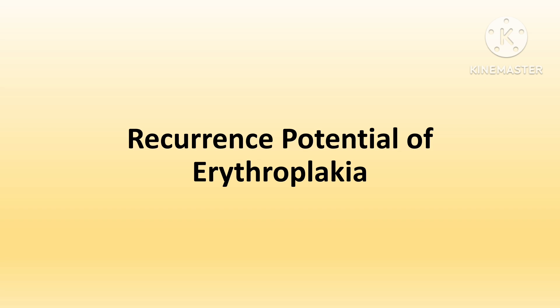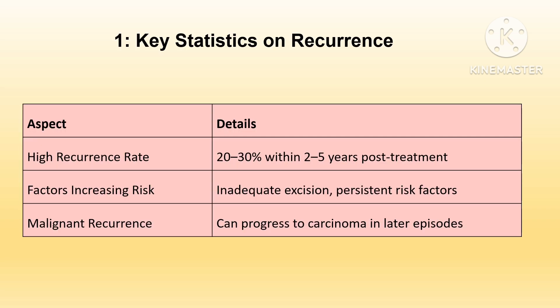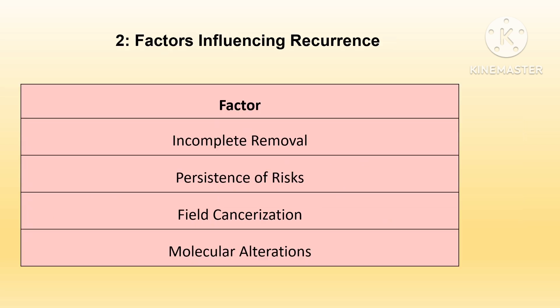Erythroplakia has a high risk of recurrence, primarily due to its association with epithelial dysplasia and its predisposition for malignant transformation. Even after removal of the lesion, persistence of etiological factors, field cancerization effects, and underlying molecular changes — such as persistent genetic mutations in p53 or other tumor suppressor genes — predispose to recurrence of erythroplakia.